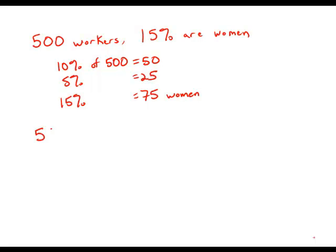If we hire 50 more people and we want 20% to be women, well, 10% of 550 of course is 55. 20% is double that. That's 110. We would need 110 women.